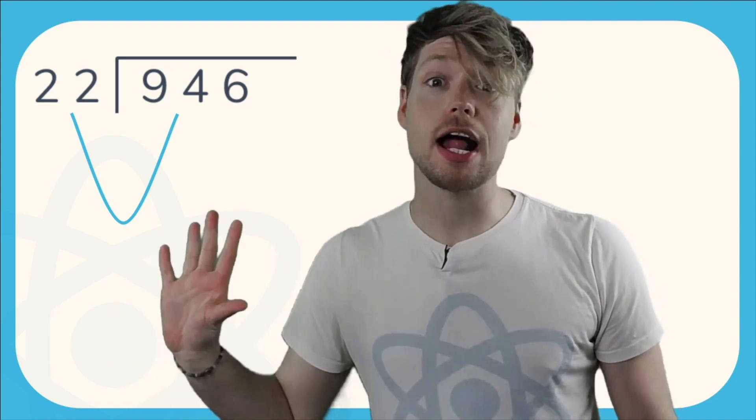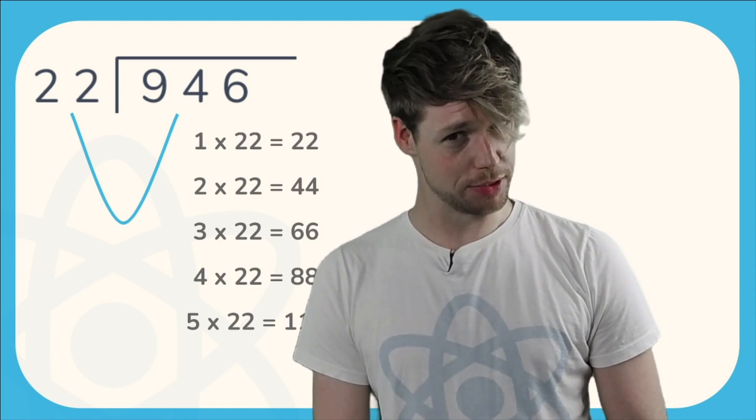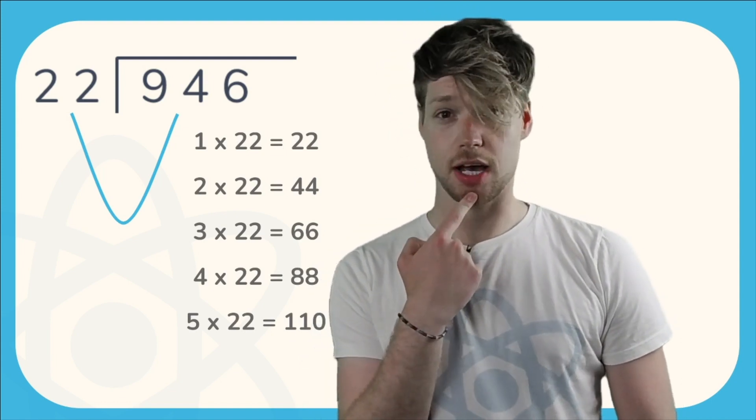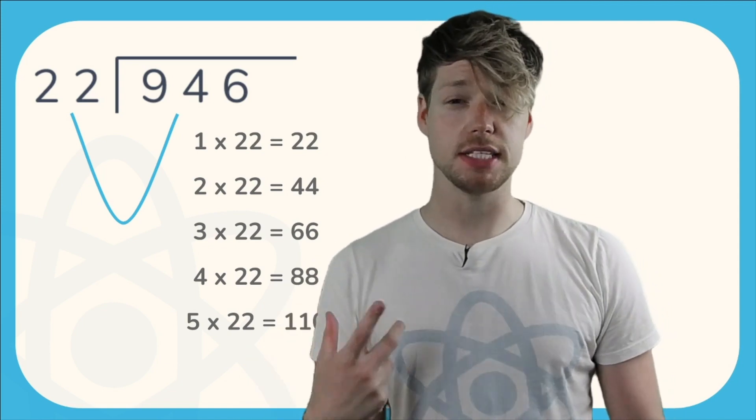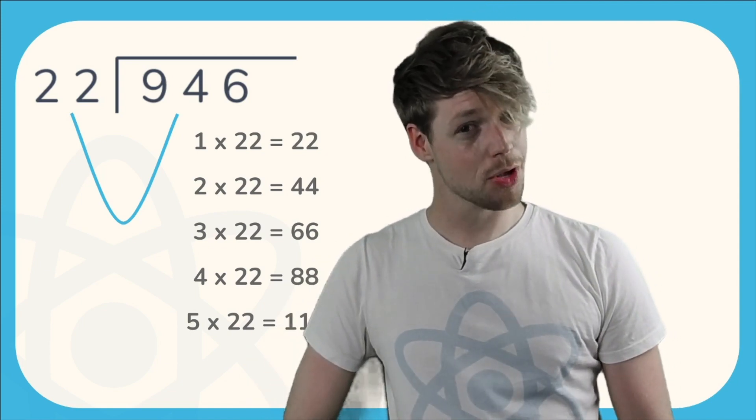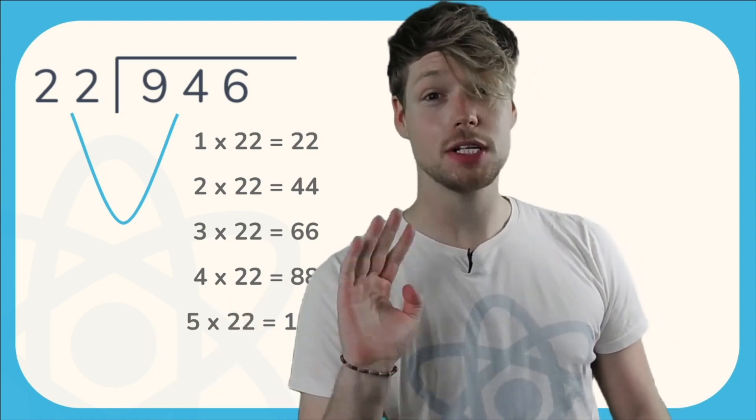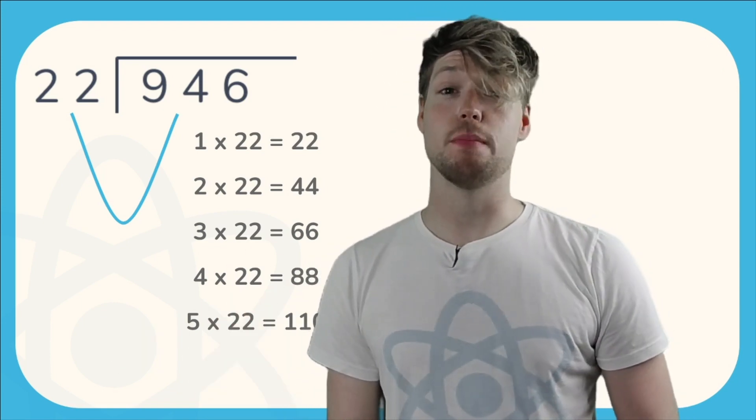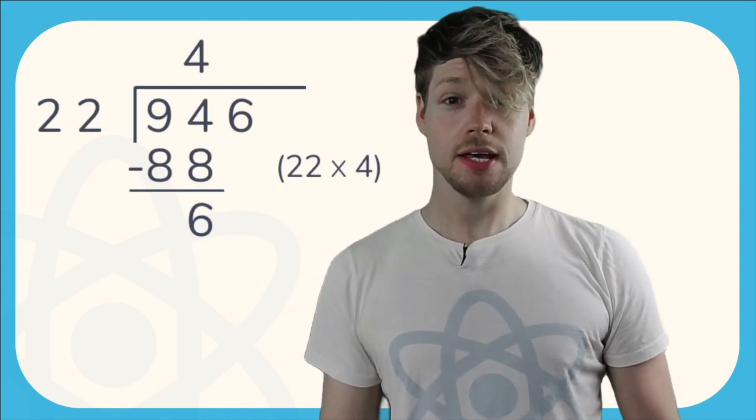How do we work this out? Well, I am a grown adult and I don't even know my 22 times tables. So one of the first things I would do is write out the 22 times tables to help me with this. If we have a look at the 22 times tables, can you see how many times we can divide 94 by 22? We can divide 94 by 22 four times, and there'll be a remainder of six.